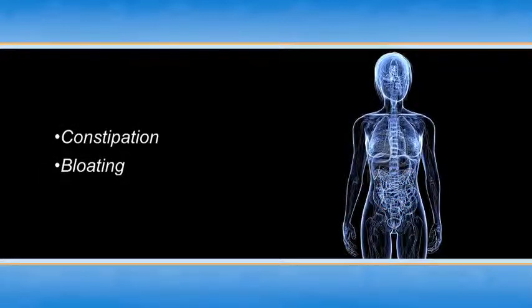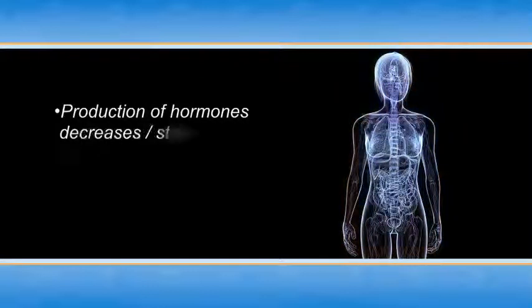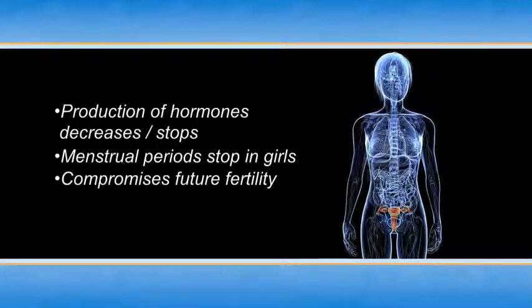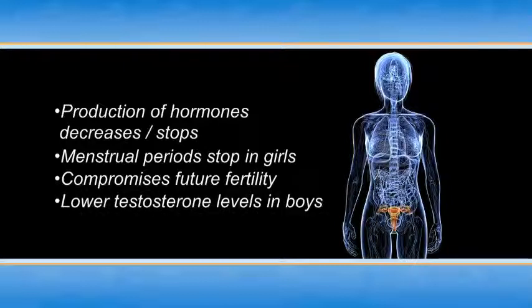When you do not have enough nutrition or energy in your body, in a period of prolonged starvation or malnourishment, the body will stop producing adequate levels of hormones. In young girls, this causes periods to stop and could compromise future fertility. In young boys, it causes lower testosterone levels.